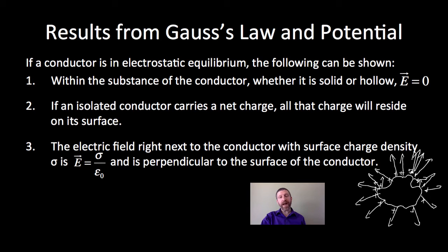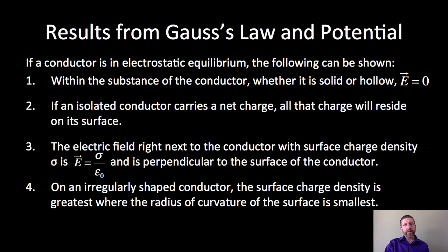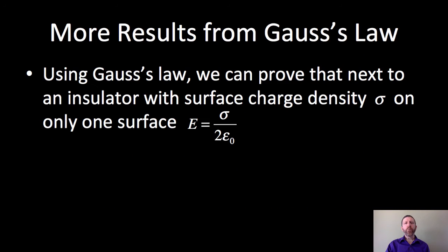In fact, it'll be greater wherever the radius of curvature is less; there'll be a higher concentration of these charges there. But no matter where you are, the electric field at that point will be sigma over epsilon naught and will be perpendicular to the surface at that point. So that is for sure: on a conductor, E equals sigma over epsilon naught right next to the conductor. In fact, it may be equal to that even farther away if it's a uniform field. Next, on an irregularly shaped conductor, the surface charge density is greatest where the radius of curvature is smallest.